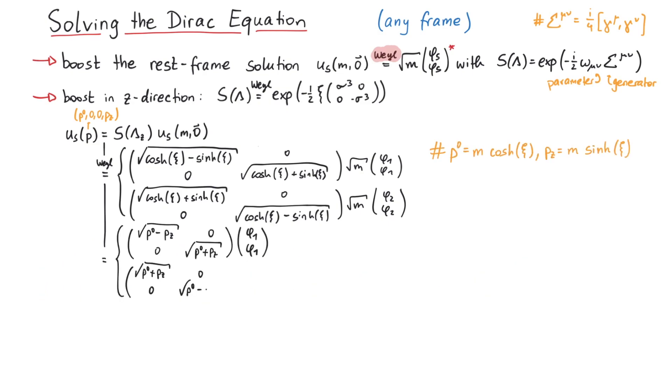And in order to write the s equals 1 and s equals 2 case together again, we reintroduce sigma 3 here. Because then, depending on phi s, we will either get a plus or a minus. And this is the result.